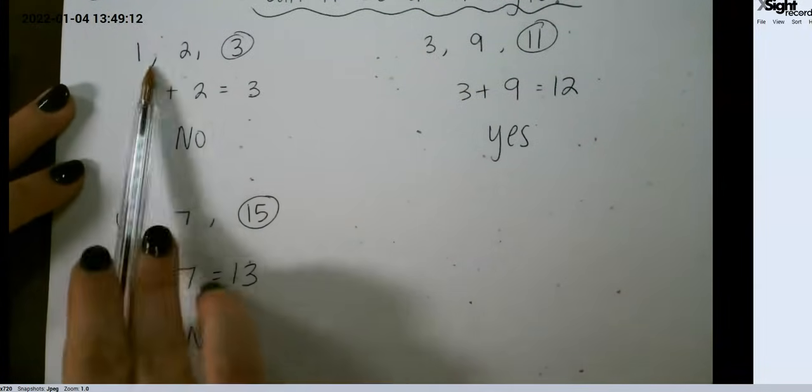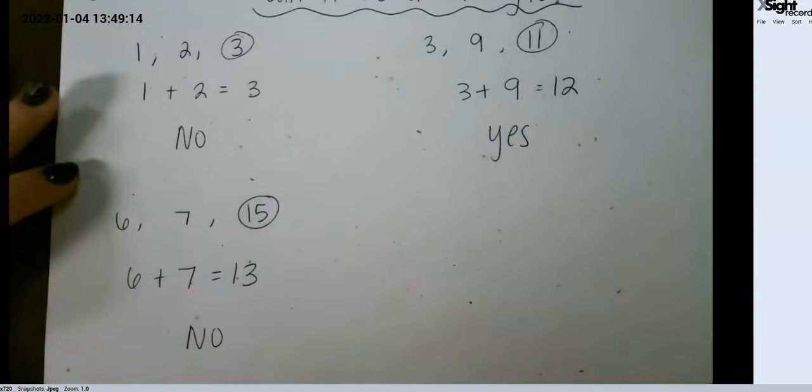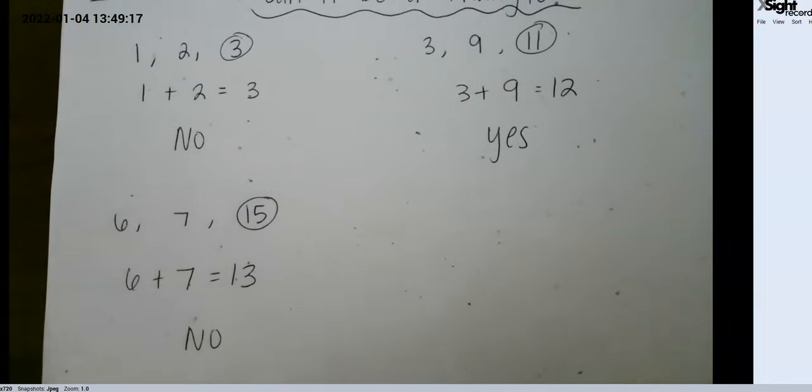I typically only add the smaller two numbers, because that will tell us either way, but you could also test it out with the other two as well.